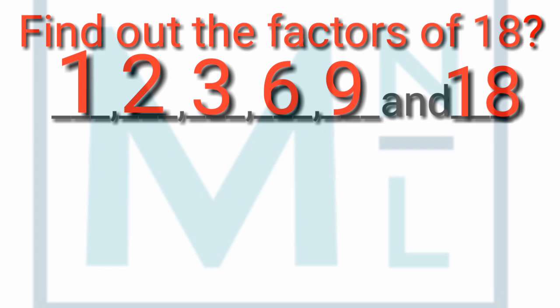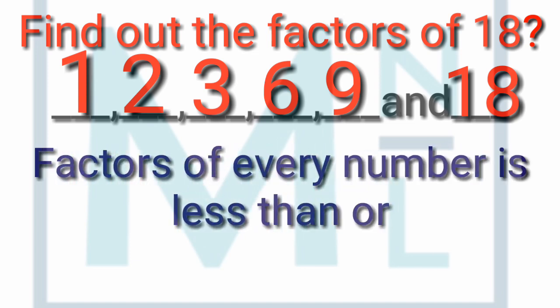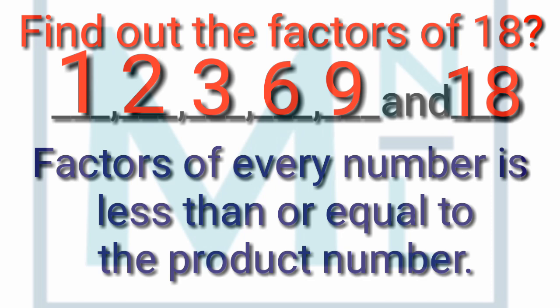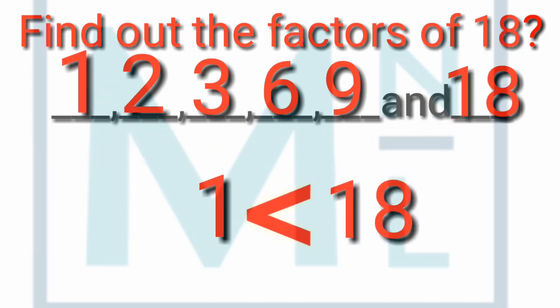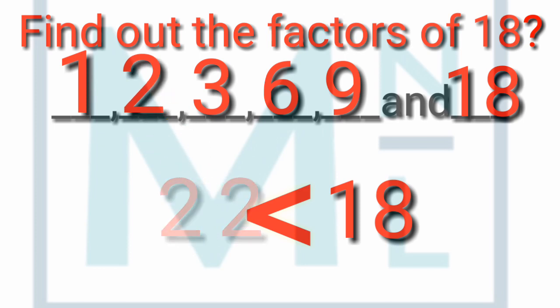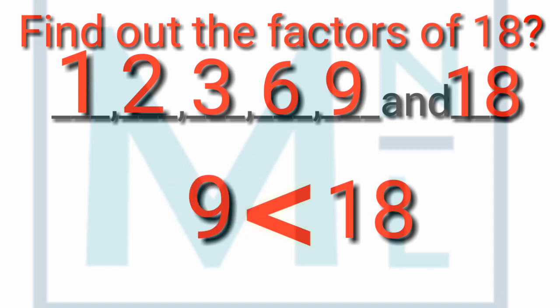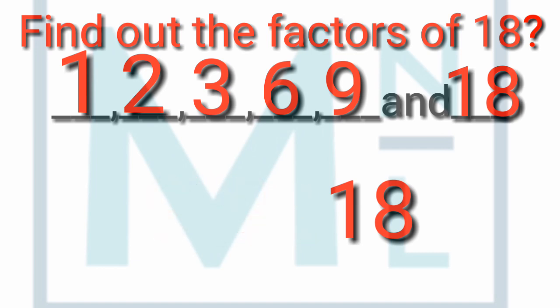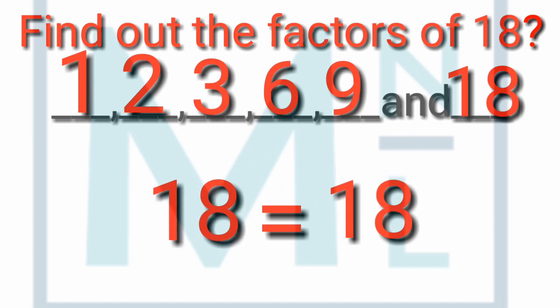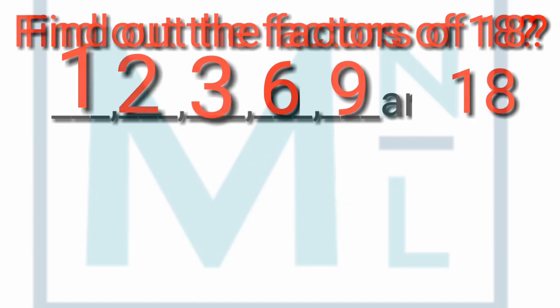If we look at the factors carefully one more time, another rule emerges. Factors of every number are less than or equal to the number itself — meaning the factors of 18 will either be smaller than 18 or equal to 18. For example: 1 is less than 18, 2 is less than 18, 3 is less than 18, 6 is less than 18, 9 is less than 18, but 18 is equal to 18 — so 18 as a factor is equal to itself.